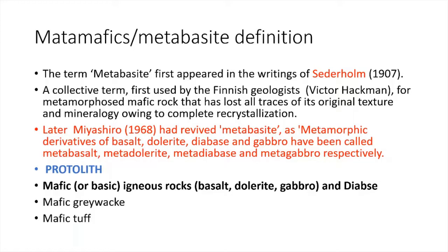Next, let us examine what the protolith of these metamorphic rocks is. The mafic or basic igneous rocks are the protolith — namely basalt, dolerite, gabbro, and diabase. Mafic gravels and mafic tuffs are also protoliths of these metabasite rocks.